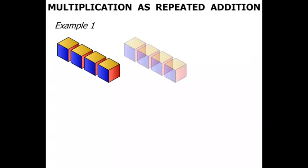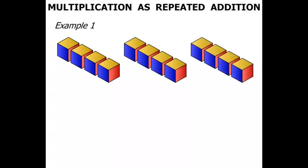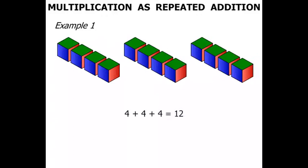We've got 4 blocks there, another 4 blocks, and then 4 more blocks. So as an addition, 4 plus 4 plus 4. Now what does that equal? 1, 2, 3, 4, 5, 6, 7, 8, 9, 10, 11, 12. It equals 12.